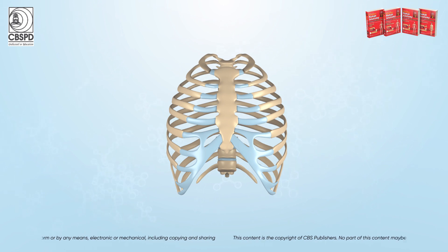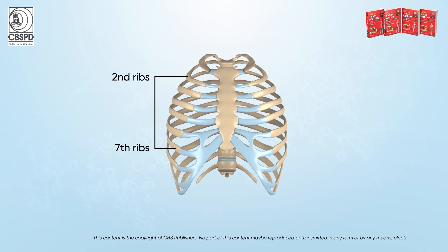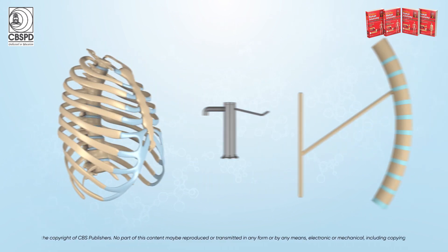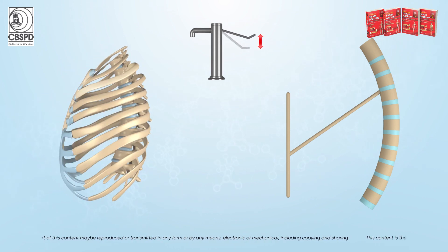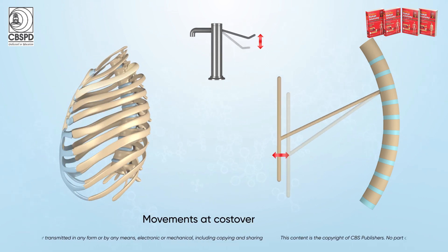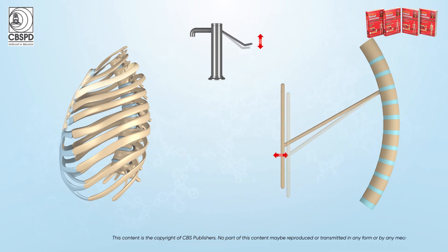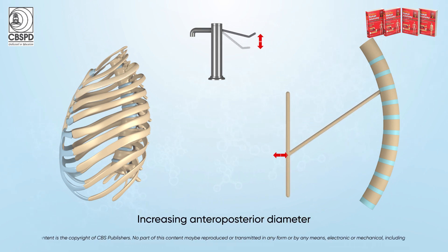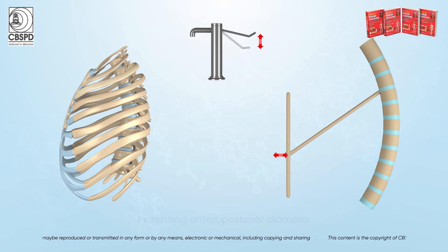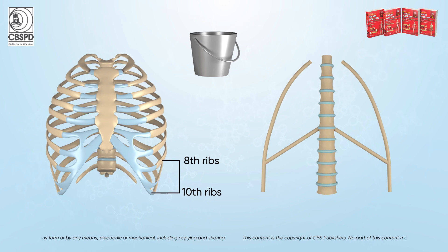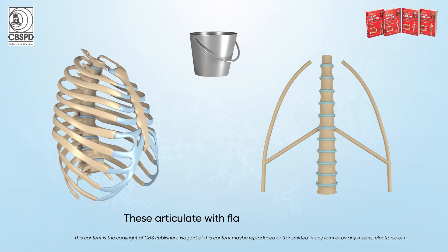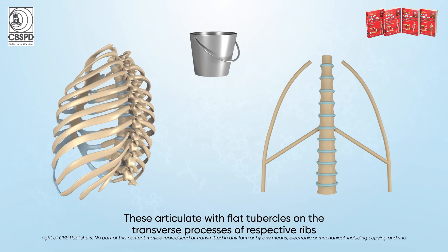The anteroposterior diameter, from the second to seventh ribs, increases by pump handle movement — similar to how the handle of a water pump is pulled up and down. Movements at the costo-vertebral and costo-transverse joints rotate the ribs and push the sternum anteriorly, increasing the anteroposterior diameter. Ribs eight to ten have flat facets on their articular tubercles, which articulate with flat tubercles on the transverse processes of their respective vertebrae.